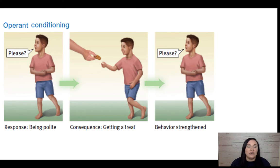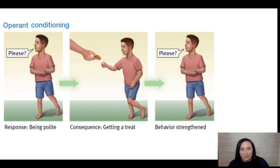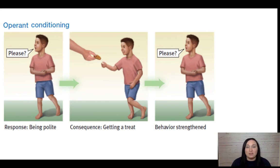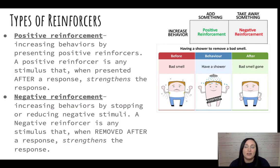For example, a child says 'please' and is given a cookie — that is a consequence. So that encourages them to say 'please' again in the future. It encourages that behavior.